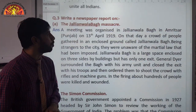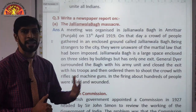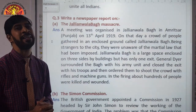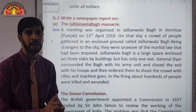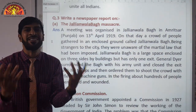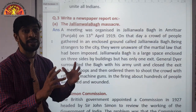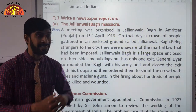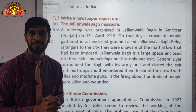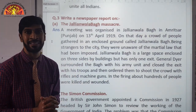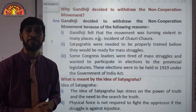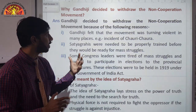Next is the Jallianwala Bagh massacre. On 13th April 1919, in Amritsar, Punjab, a meeting was held because many of our leaders had been arrested due to the Rowlatt Act. General Dyer reached the meeting place, surrounded the Bagh, and ordered his troops to open fire. The firing lasted for 10 minutes and thousands of people were killed. This was the worst event in history — the Jallianwala Bagh massacre.